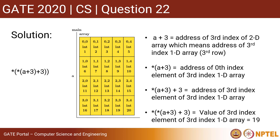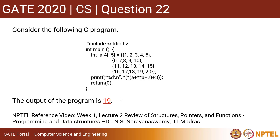Now, adding another star — that is, dereferencing `*(a+3)+3` — will give us the value stored at that address, which is 19. So `*(*(a+3)+3)` = 19. This was our final expression, and it equals 19. Therefore, the answer to this question is 19. Thank you.